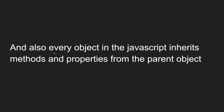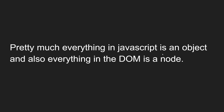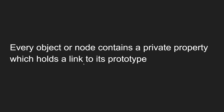Almost every object in JavaScript inherits methods and properties from the parent object. Everything in JavaScript is an object, and everything in the DOM is a node. Every object or node contains a private property which holds a link to its prototype. So to understand host objects and native objects, we need to first understand prototypes.